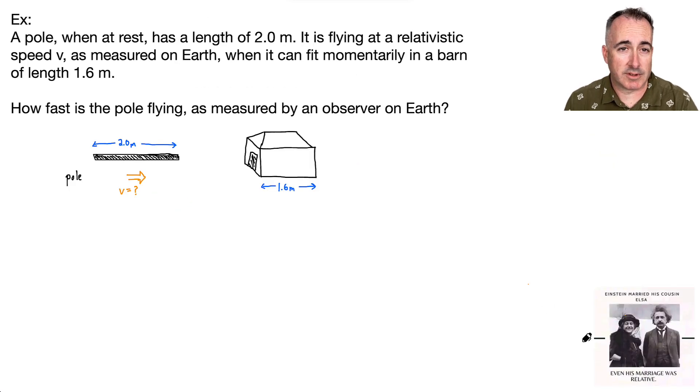Okay, one more example. Since we're talking about relativity, Einstein married his cousin Elsa. Even his marriage was relative.